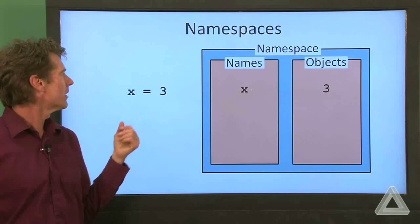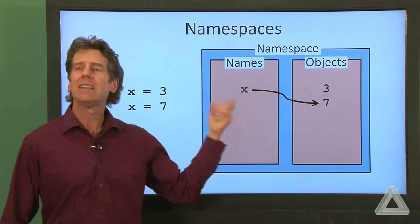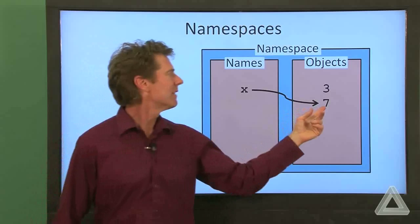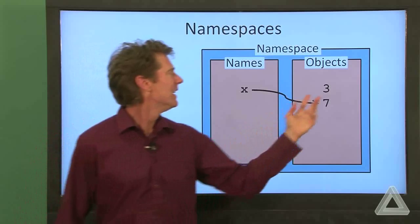Now, later on in our code, we might say x is equal to 7. And what Python will do is, well, it doesn't have a new name, but there is a new value here. And it associates that name with the new value.